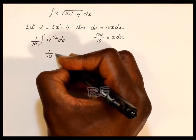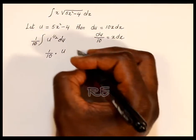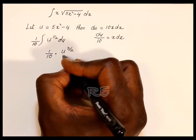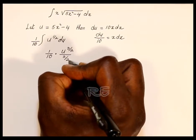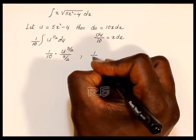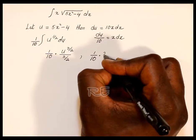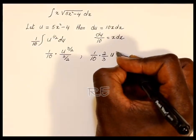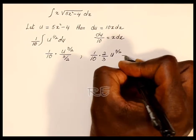So it's 1 over 10 multiplied by the integral of u to the 1 half du. So it's 1 tenth times u to the 1 half plus 1, which is 3 halves, divided by 3 halves, when I apply the formula, plus c. It's going to be 1 over 10. Let's take care of the denominator — the reciprocal is 2 thirds. So 2 to the 3 halves plus c.